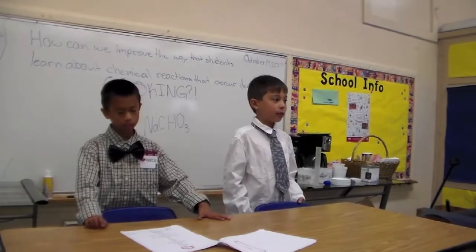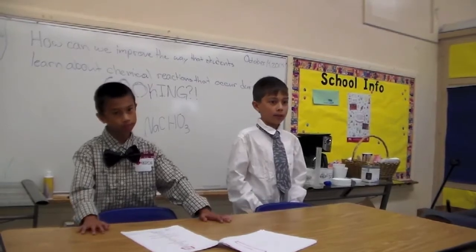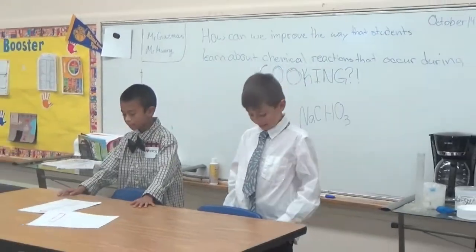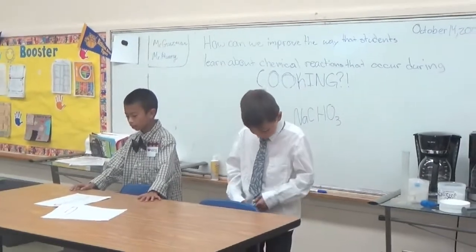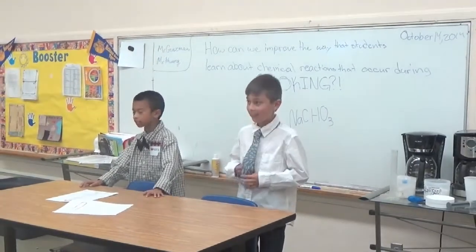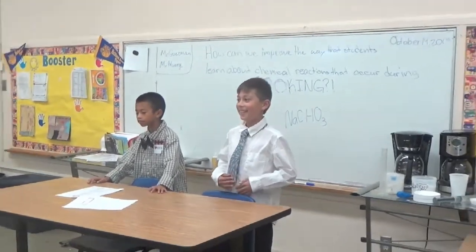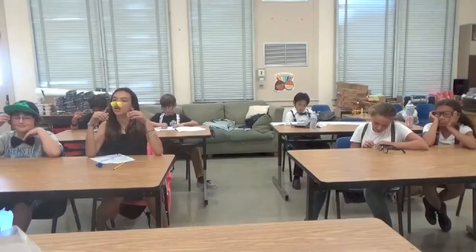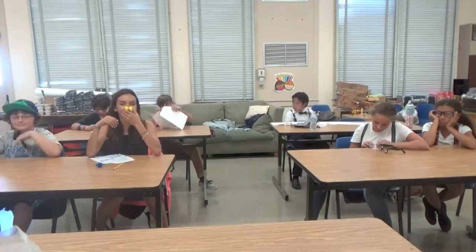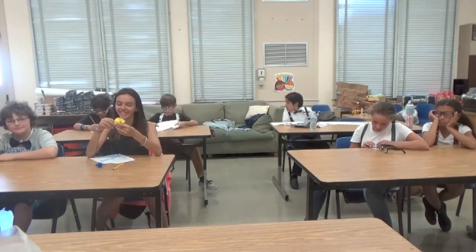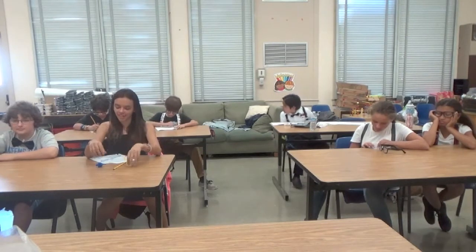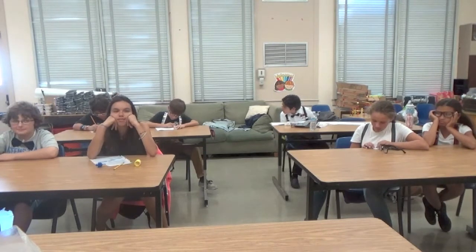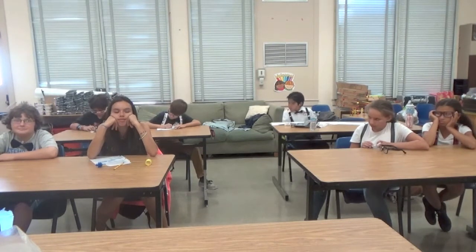So what does baking soda do to cookies? Doesn't it make it rise or something? Yeah, that's right. Basically, there's water in the cookies at 212 degrees Fahrenheit. The water vaporizes, and after a while, the baking soda creates gas, and that makes little holes which make the cookie light.